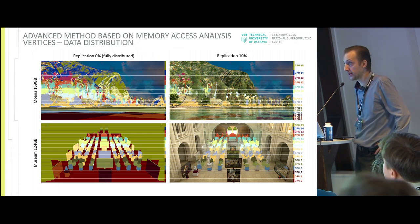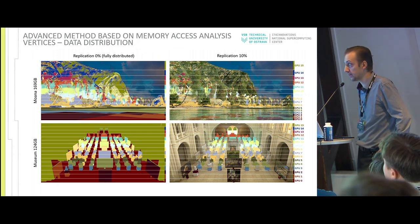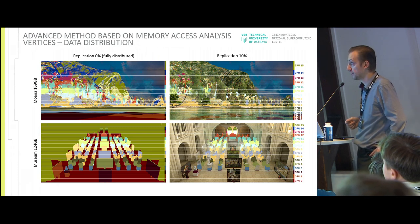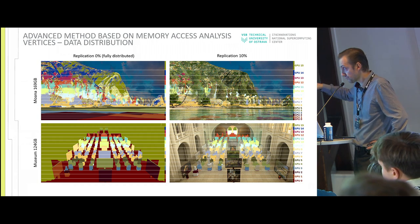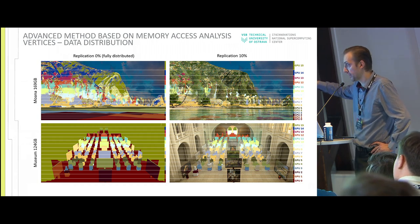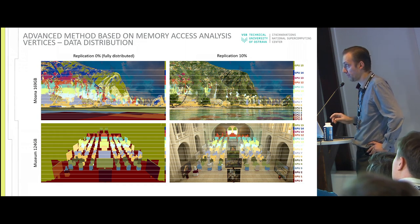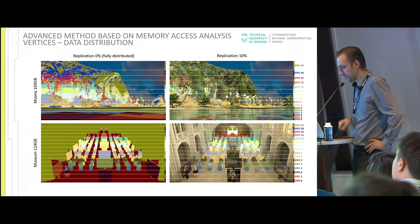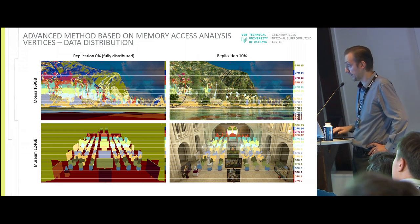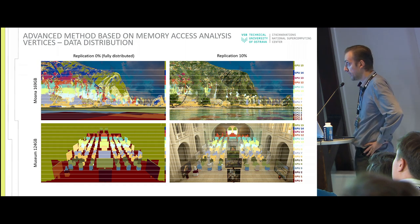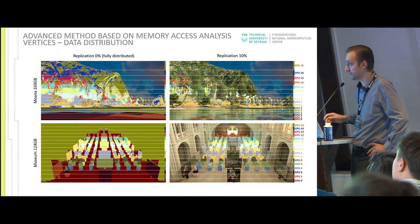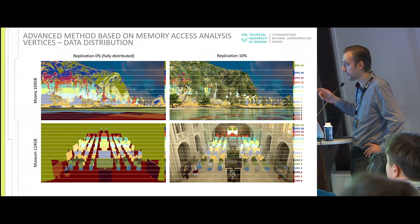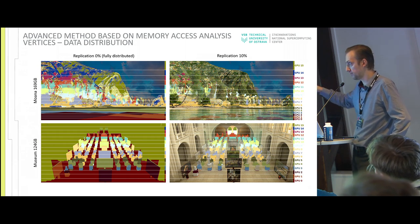This is a visualization example showing how the distributed array looks — in this case, the vertex array and where vertices are placed. On the left you can see fully distributed data, where each color represents a GPU. On the right side you can see the rendered image showing replication: some parts are replicated and others with specific colors are distributed.